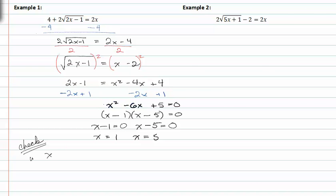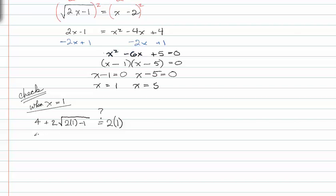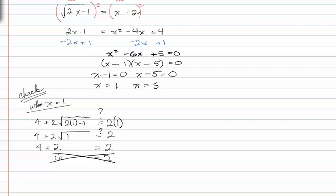When x is equal to one, we're going to check that one first. Remember we have to start from our original equation, so four plus two times the square root of two times one minus one is equal to two times one, and we're checking to see if this is a true statement. We'll scroll down a little so we don't run out of room. Four plus two times the square root of two minus one, which is one — does that equal two? Well four plus two, and the square root of one is just one, so two times one is two. That gives us six equal to two, which most certainly does not work. So we can't use x is equal to one.